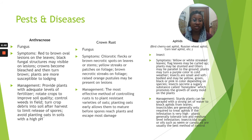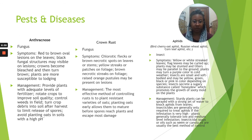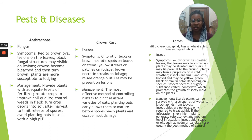Next, crown rust, which is another fungus. Symptoms include chlorotic flecks or brown necrotic spots on leaves or stems, yellow streaks or patches on foliage, brown necrotic streaks on foliage, and raised orange pustules may be present on lesions. Management: the most effective method of controlling rust is to plant a resistant variety of oats. Planting oats early allows them to mature before the spores reach the plants and escape most damage.